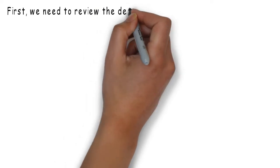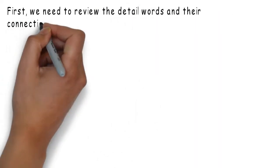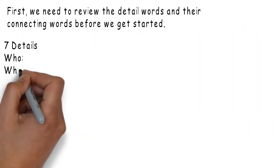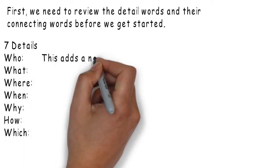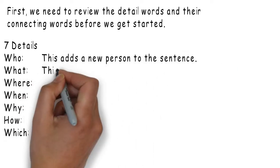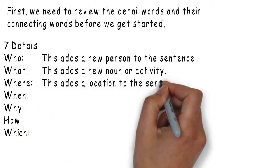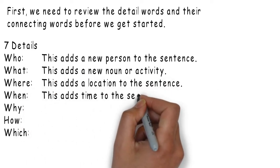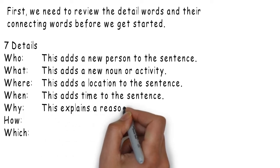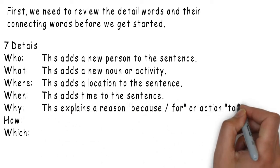First, we need to review the detail words and their connecting words before we get started. Who – this adds a new person to the sentence. What – this adds a new noun or activity. Where – this adds a location to the sentence. When – this adds a time to the sentence.